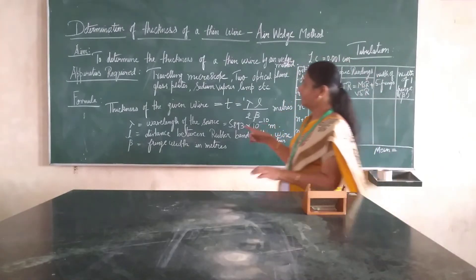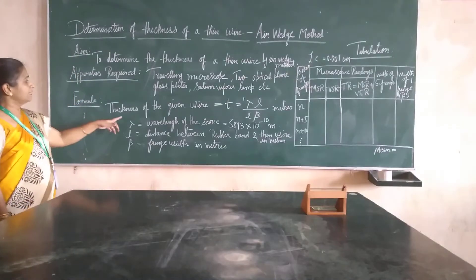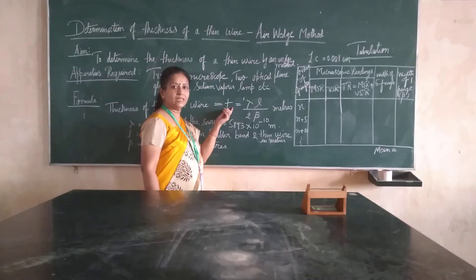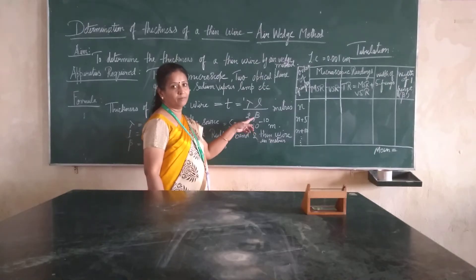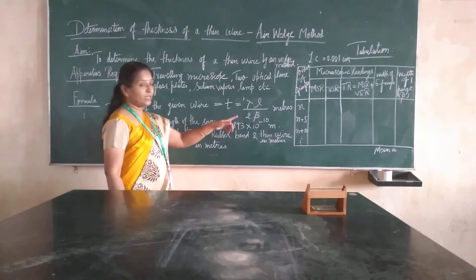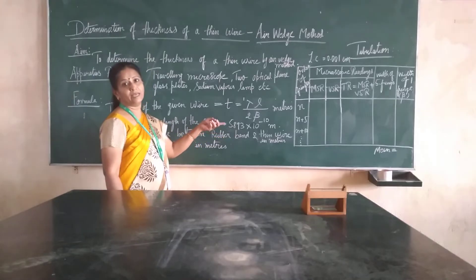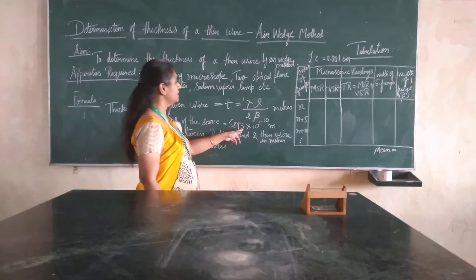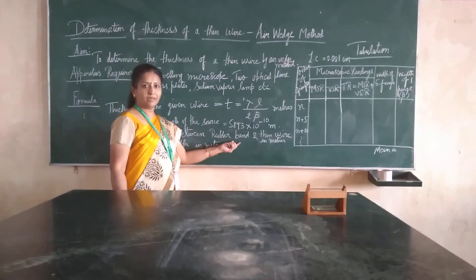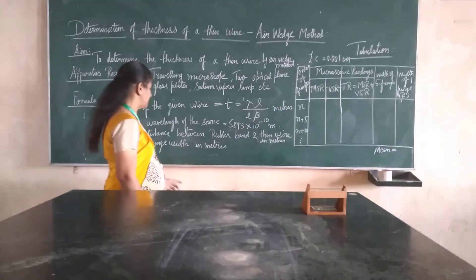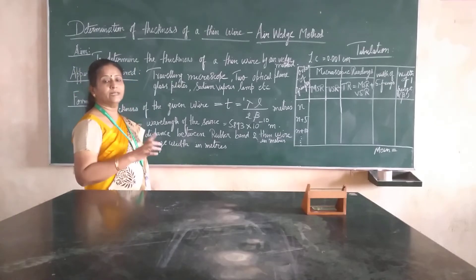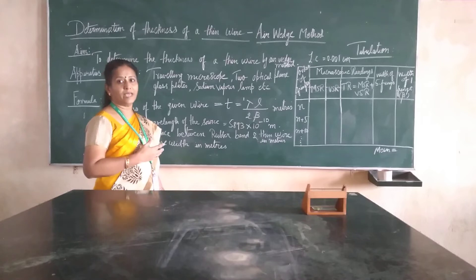The thickness of the given wire can be calculated using the formula T = λL / 2β, measured in meters. Lambda (λ) is the wavelength of the source; since we are using a sodium vapor lamp spreading yellow light, the wavelength is 5893 × 10⁻¹⁰ meters. L is the distance between the rubber band and the thin wire, measured in meters. Beta (β) is the fringe width — the distance between alternate dark and bright bands formed as an interference pattern.